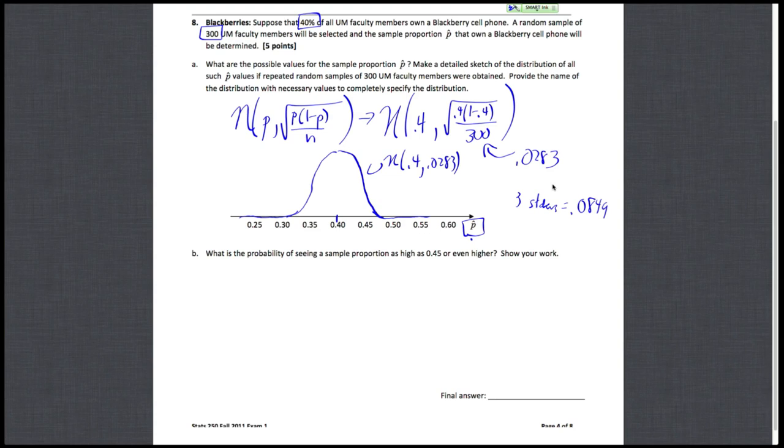And then lastly, we need the probability of seeing a sample proportion as high as 0.45 or even higher. So we want the probability that we get a P-hat that's as high or even higher than 0.45. So we know the distribution of P-hat.